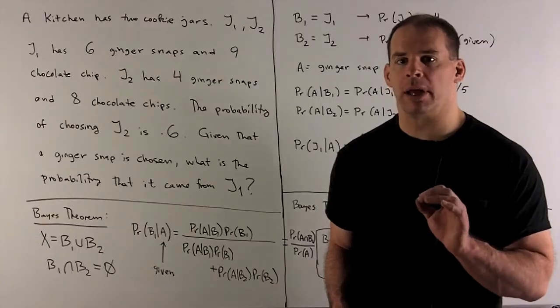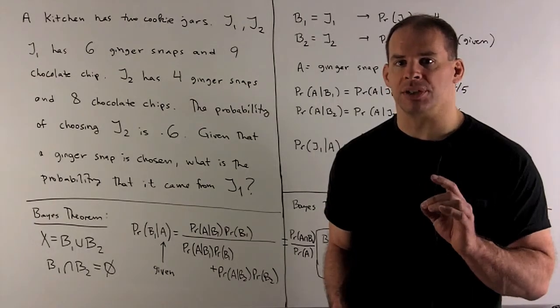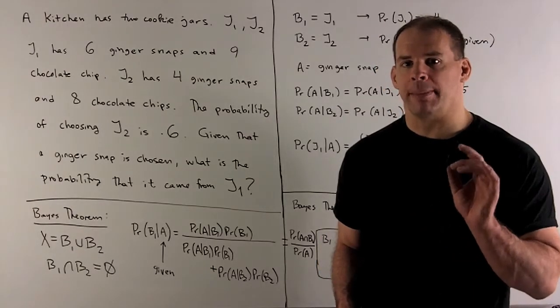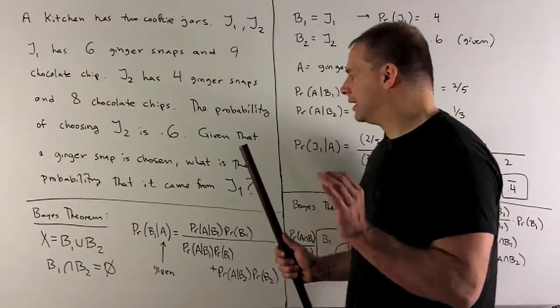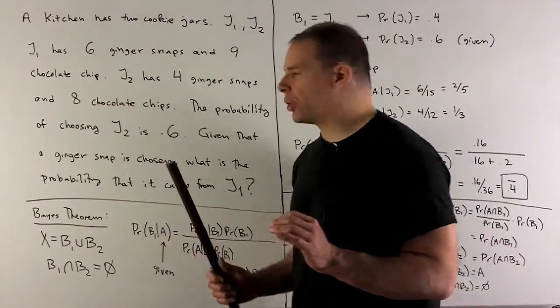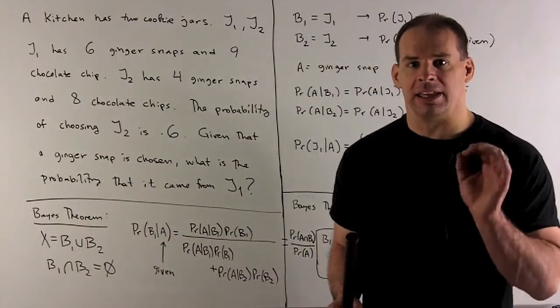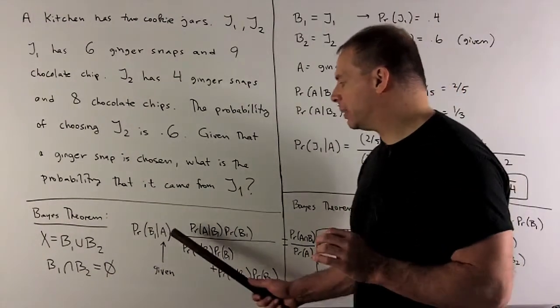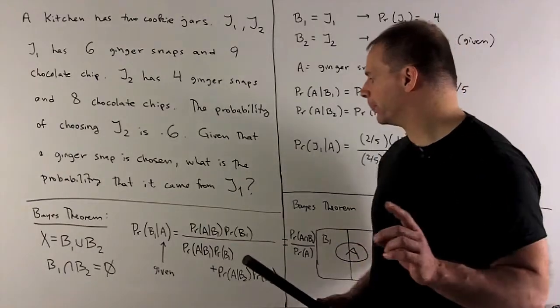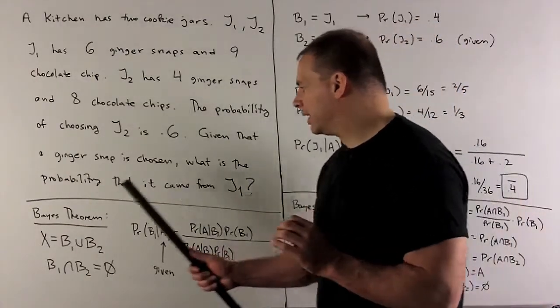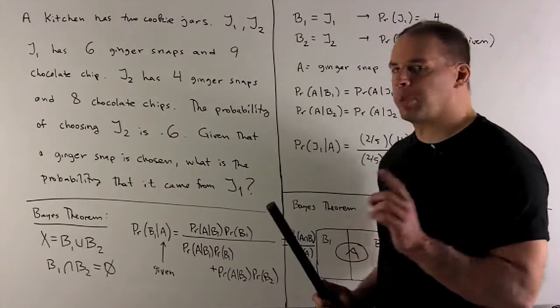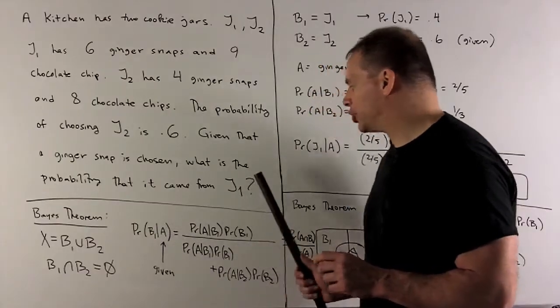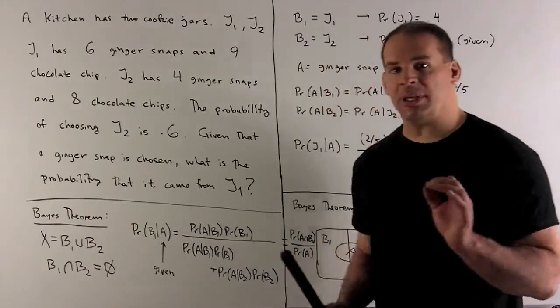If we want to put numbers to this formula, we have to figure out what each item means. So I read through the problem again, and then what we want is going to come out in our last statement. Given that a ginger snap is chosen, so A is going to be the event a ginger snap is chosen. What is the probability that it came from jar one? So B1 is going to be jar one, A is going to be ginger snap.